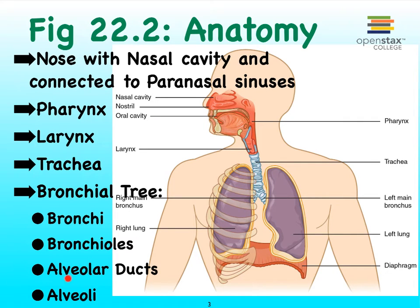Ultimately we get to what we call alveolar ducts with alveolar sacs made up of alveoli. We should also mention the diaphragm, which is this dome-shaped skeletal muscle that, when we inspire, will contract and flatten downward in an attempt to stretch out our ribcage and allow air to flow into our thoracic cavity, as we will learn in the videos on respiratory physiology.